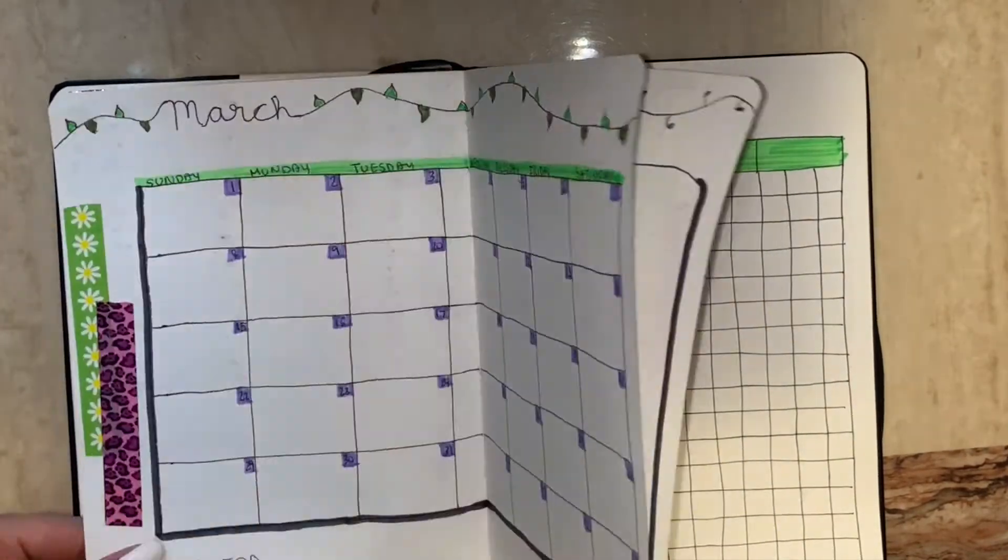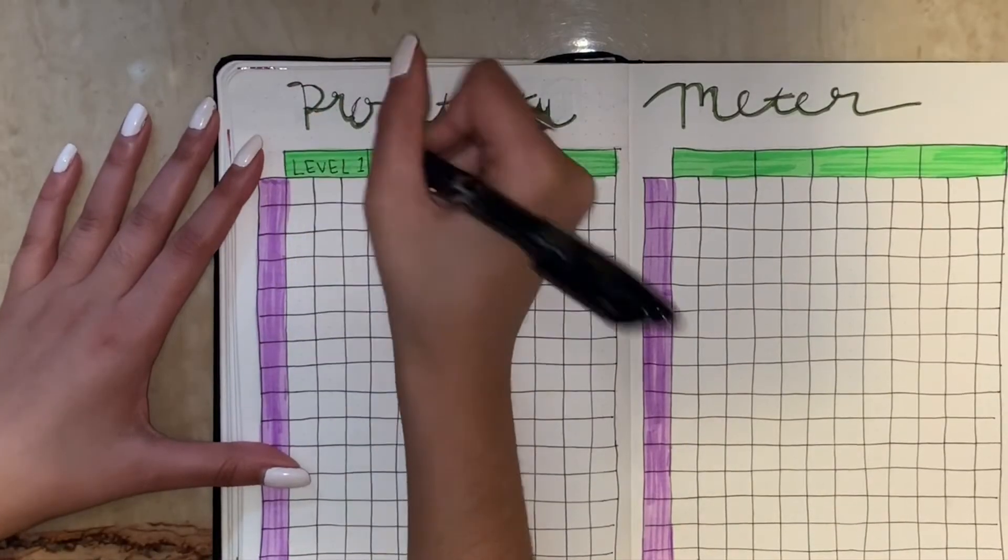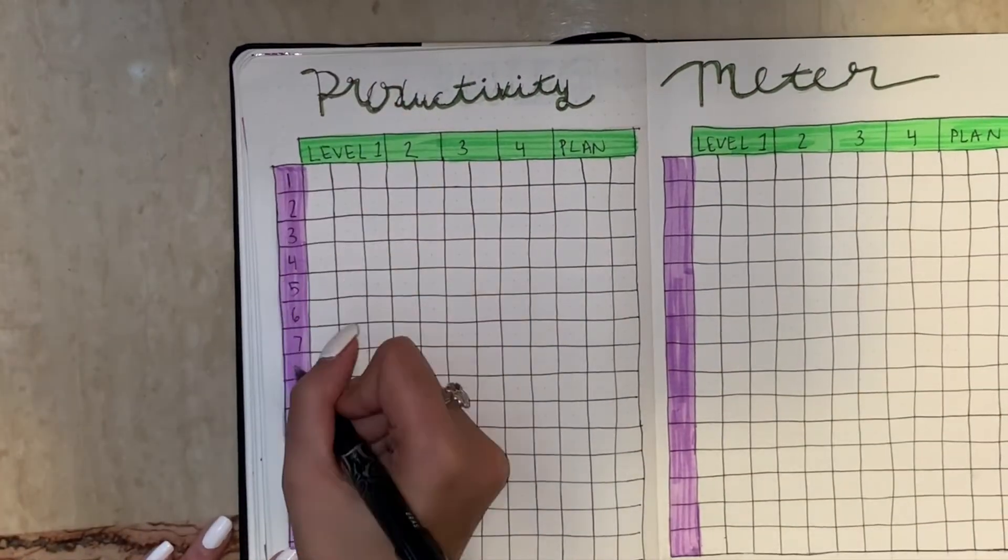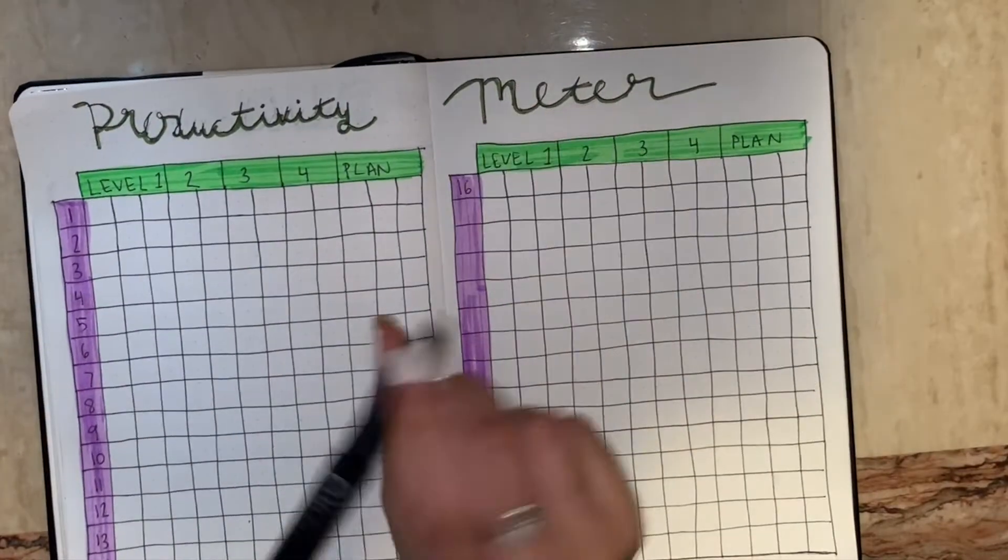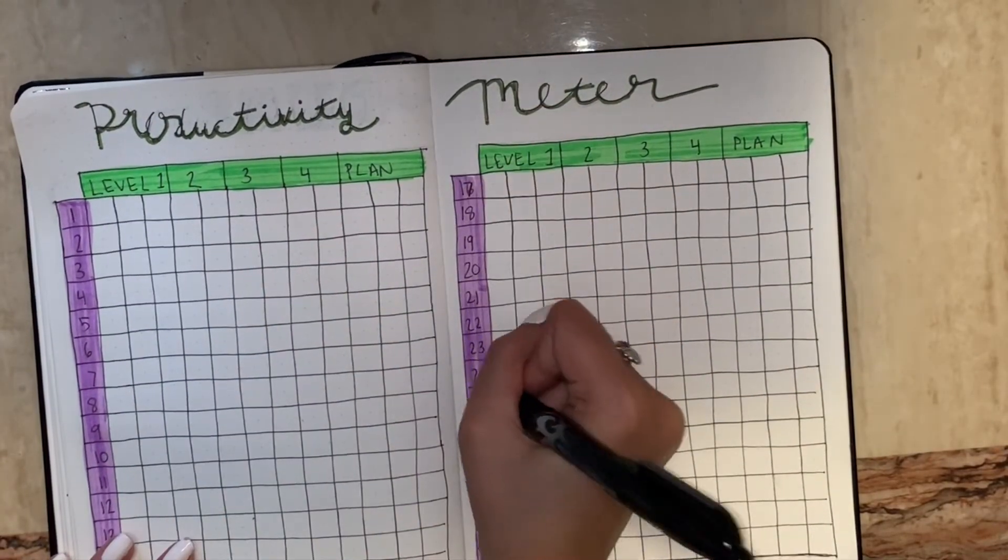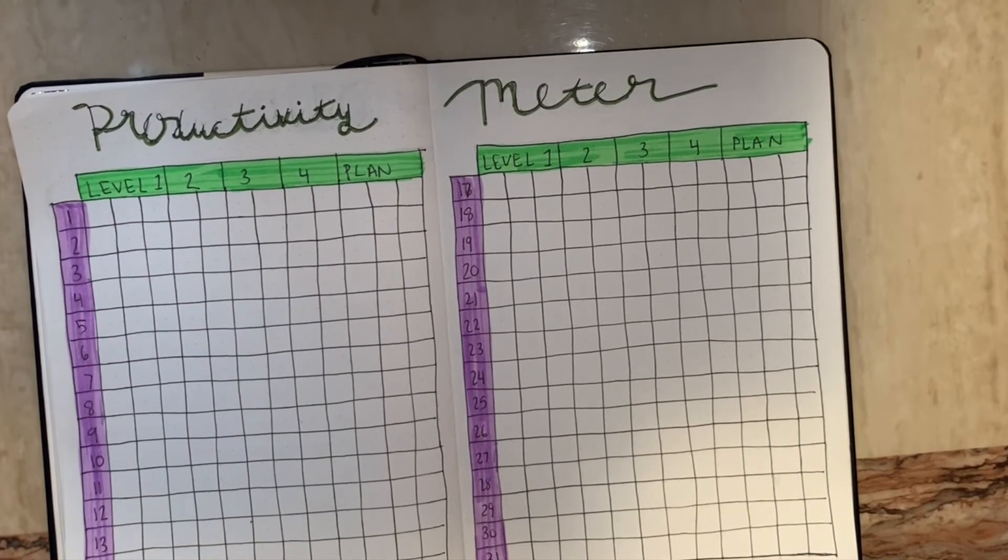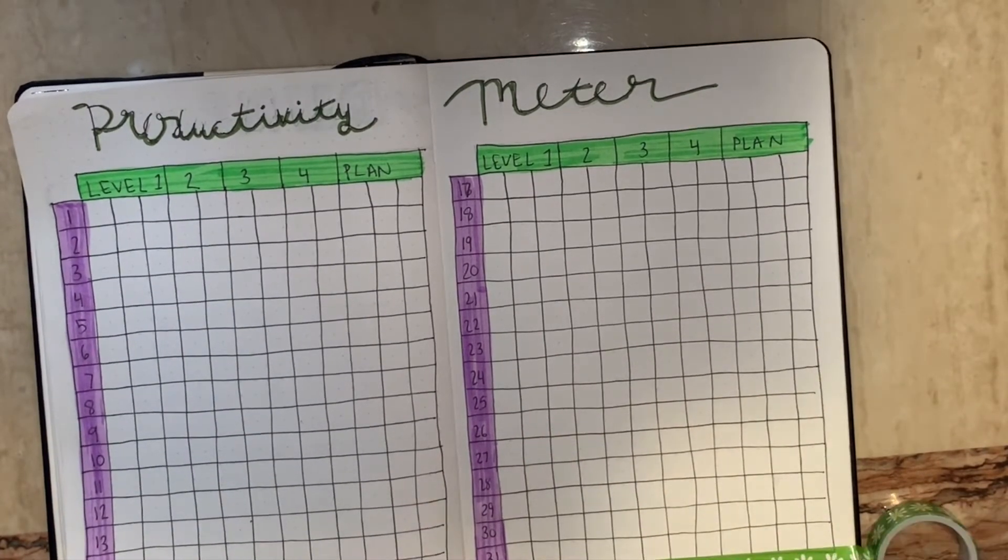And so now I'm going in with my pen and I'm writing level 1, 2, 3, 4 plan and the numbers of each day. I'm also adding some washi tape at the bottom.